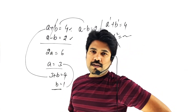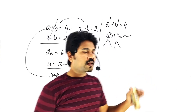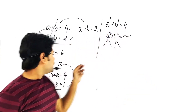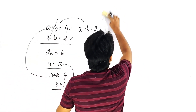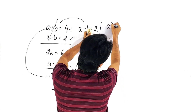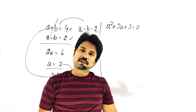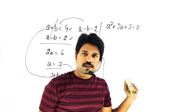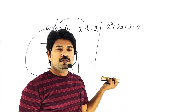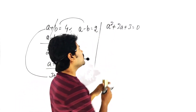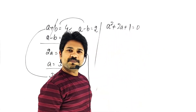Quadratic equations — that is not our focus right now. But to tell us that values are at most two for a quadratic. Suppose a squared plus 2a plus 3 is equal to 0 — this is an algebraic equation where the maximum power of a is 2.